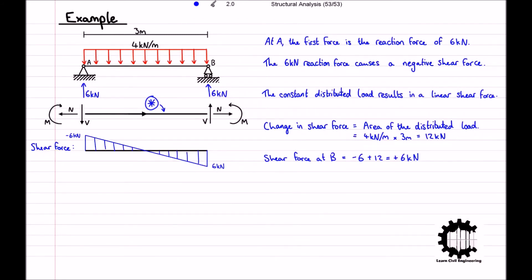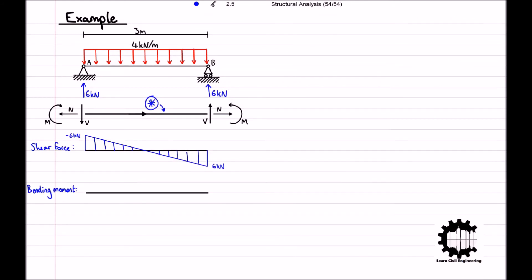Moving on to the bending moment diagram and starting at the left end of the bar: there are no moments applied at point A or to its left, and no forces to the left of point A that could cause a bending moment. Therefore, the bending moment at point A is zero.